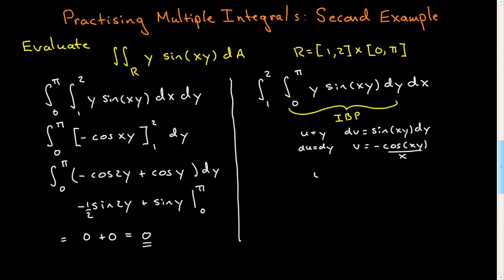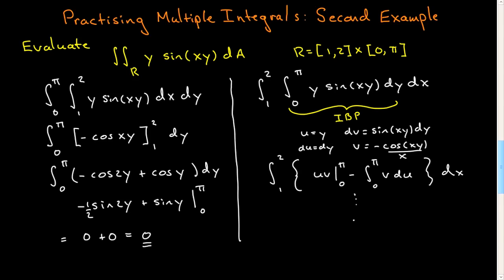That gives me uv evaluated from 0 to pi, minus the integral from 0 to pi of v du. You still have the outer integral dragging along for the ride. You're going to be at this for a while, but if you press ahead you'll find that the final result is also zero — the same as before. I'm not going to work through all the details here.